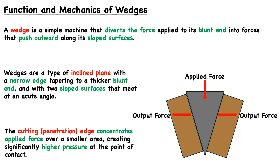We can visualize this with the help of this illustration. We have our wedge in the middle, we have the applied force to the blunt end, and then we have the force that comes as a result — the output force from the sloped surfaces.